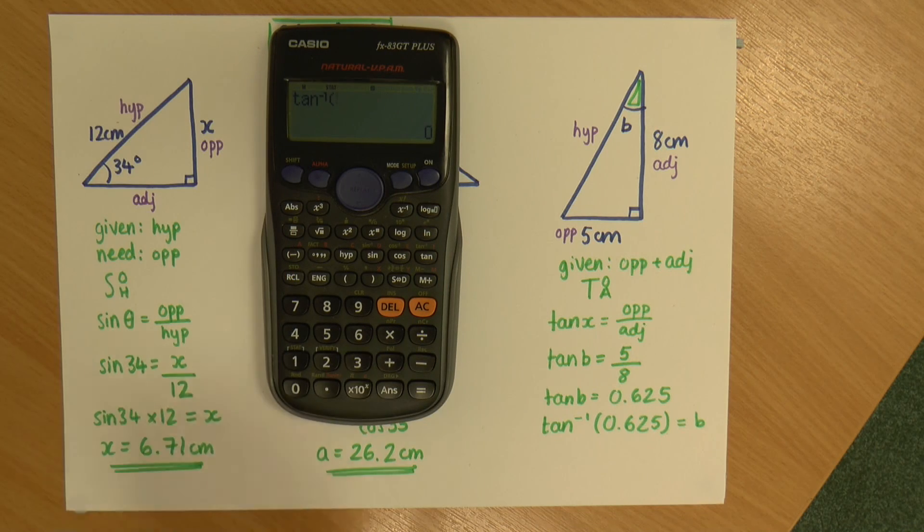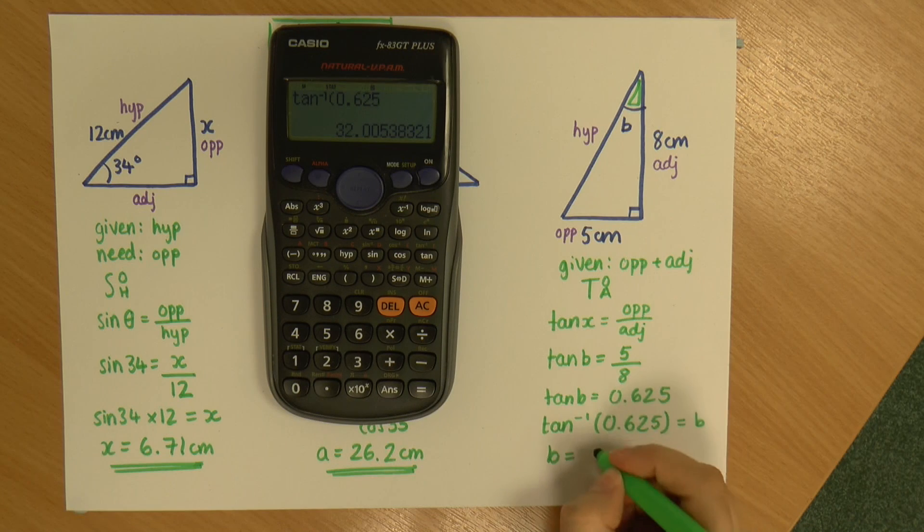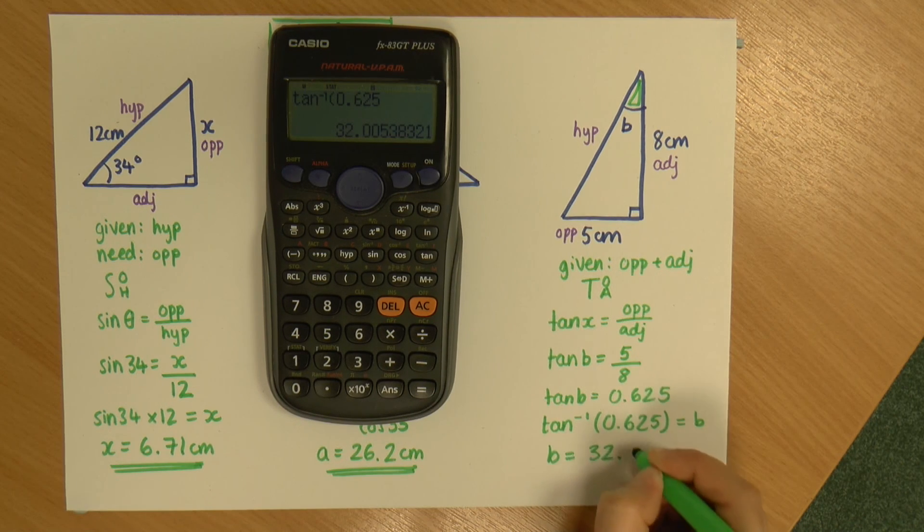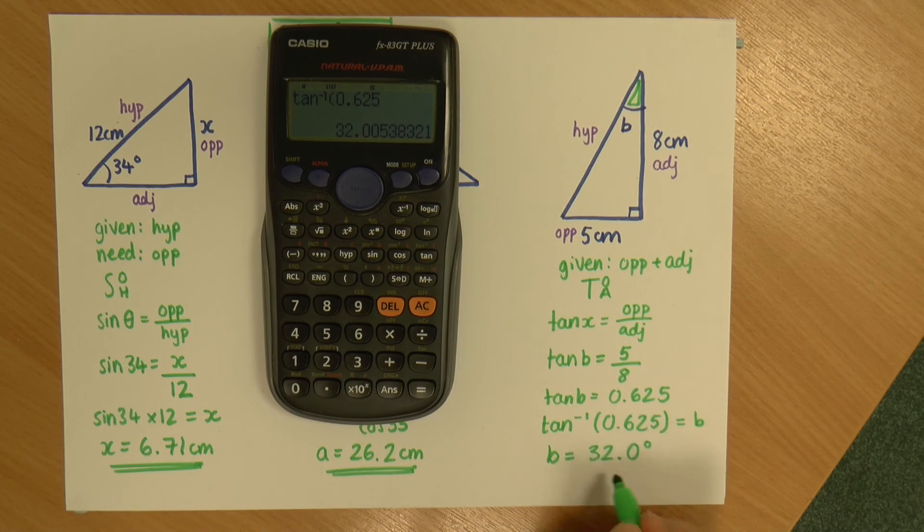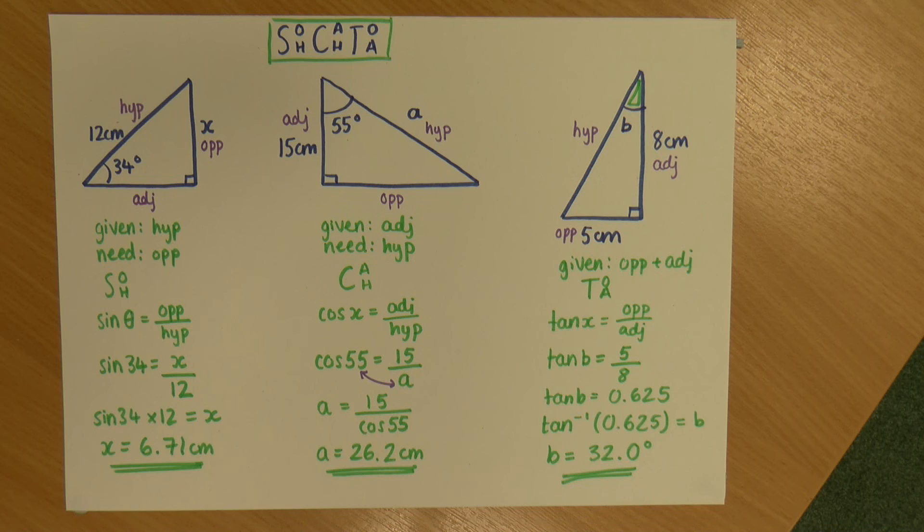So shift tan, and that gives me my tan to the minus 1, 0.625. There we go. And that gives me an angle B of 32.0 degrees. And that's to three significant figures or one decimal place. That's why I've put that zero there. So that is three examples that we might be given of how to use trigonometry, how to find missing sides and missing angles as well.